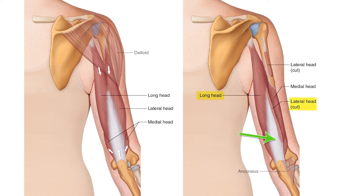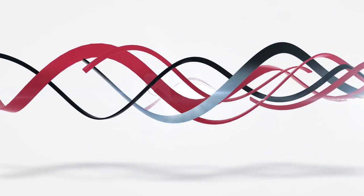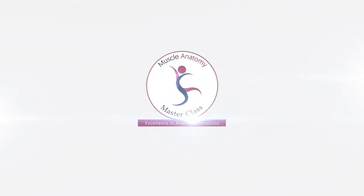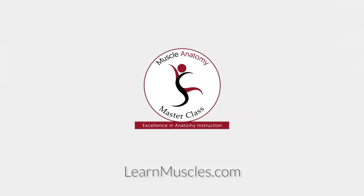One common distal tendon crosses the elbow joint posteriorly to attach into the olecranon process of the ulna.